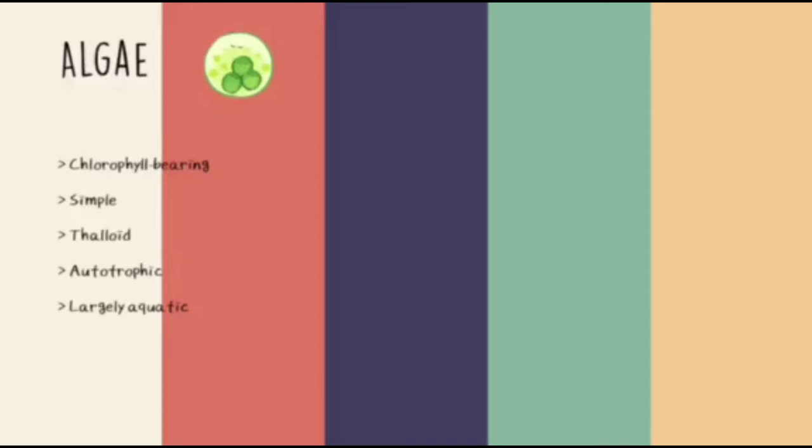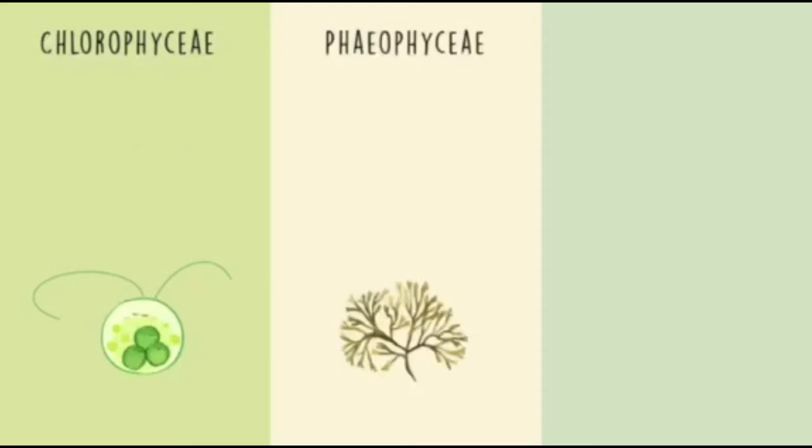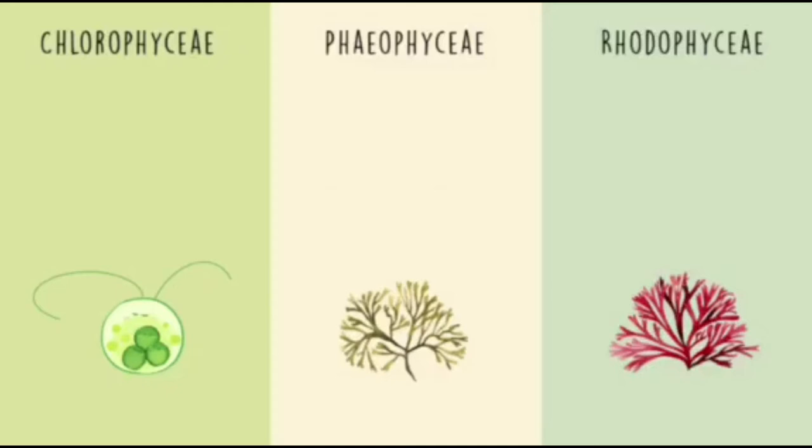The algae are divided into three main classes. First of all, the chlorophyceae that are known as green algae. Secondly, the phaeophyceae which is known as brown algae. And thirdly, rhodophyceae that are commonly known as red algae.